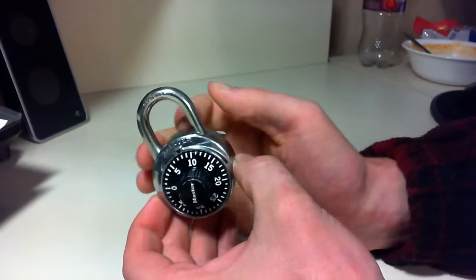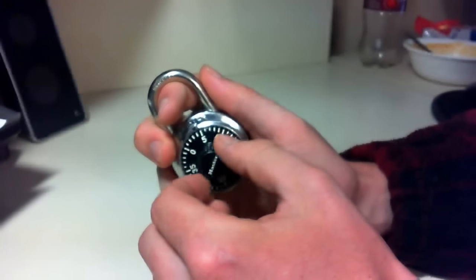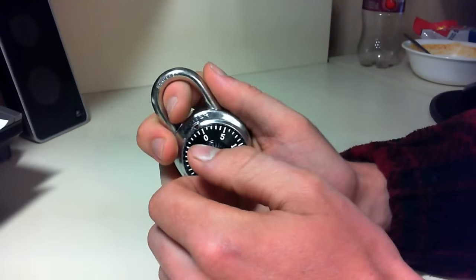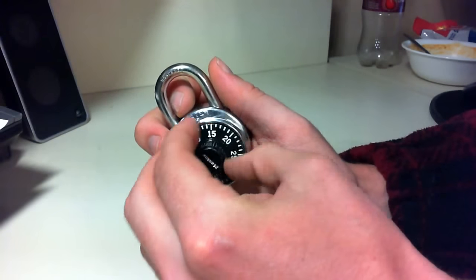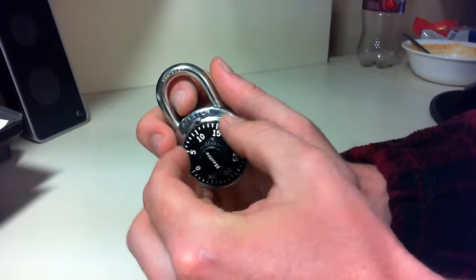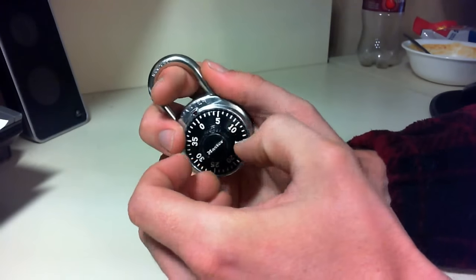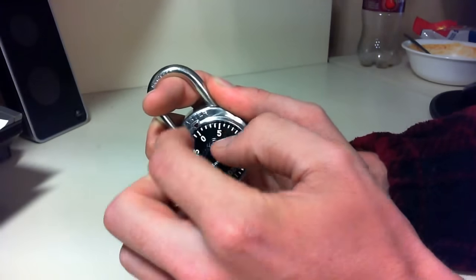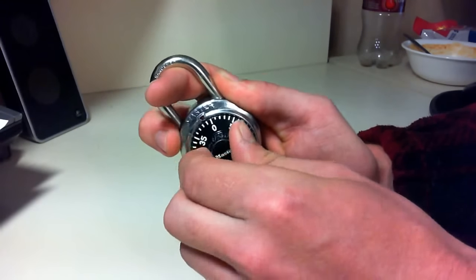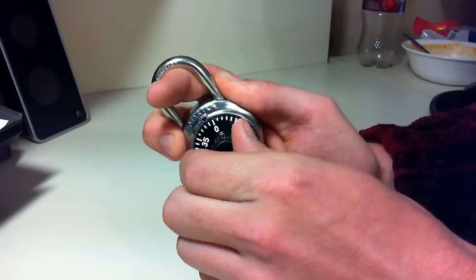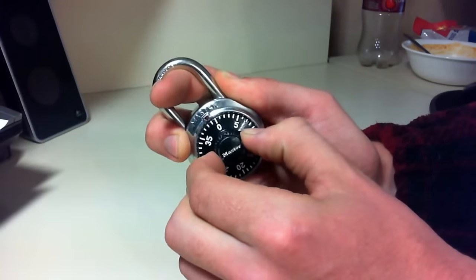Once you've reached this point, you're going to find the last number. In order to find the last number, you're going to turn clockwise a few times to reset the lock, and then you can start at zero and apply a lot of upwards pressure, the most pressure you can apply, and then slowly turn the lock clockwise until it locks down on a point where you can't turn it anymore. You're going to take a look at that point, and if it's in between two numbers, you're just going to ignore it.